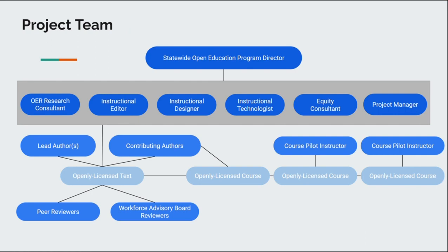On this slide there's an organizational chart with the statewide open education program director at the top overseeing the project. Just below that is a gray box with six project leadership roles: an OER research consultant who supports our authors in finding openly licensed content and with learning about attributions, and our instructional editor who supports our authors in textbook development from the outline stage all the way through to editing and recommendations at the chapter, half manuscript, and full manuscript stages.